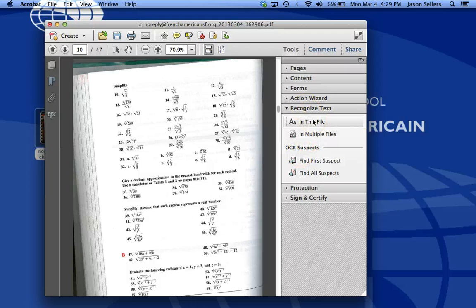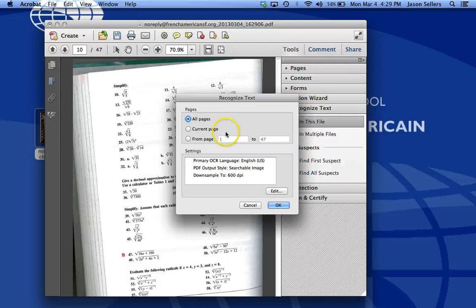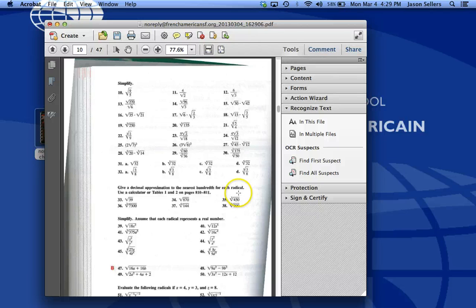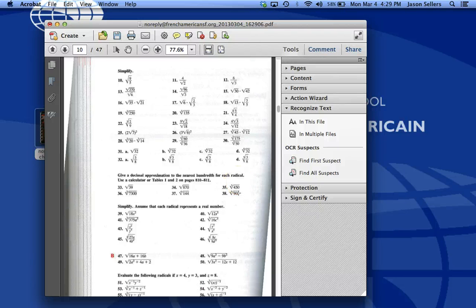And let's try it one more time. Again, clicking Recognize Text in this file for the current page. Click OK. So now that we've gotten rid of the border, it's recognizing the text a little better. And you can see that it's oriented it correctly.